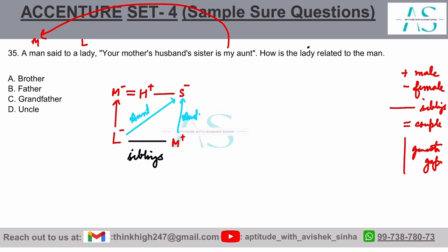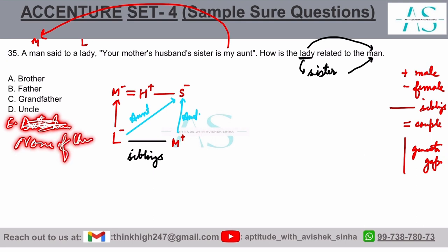How is the lady related to the man? The lady is the sister to the man. Do we have sister as one of the options? Let's see: brother, father, grandfather, uncle. No. But please pay attention, sister is the correct answer here. If you have one of the option as data inadequate or none of these, that must have been the correct option here.